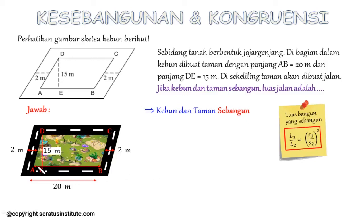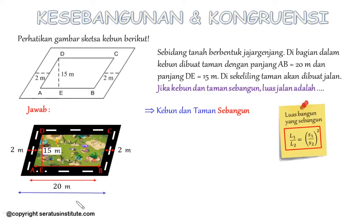Jika dilihat, AB yang merupakan alas dari taman bersesuaian dengan panjang atau alas dari kebunnya. Alas dari kebun panjangnya: panjang AB 20 meter, kemudian lebar jalan di sebelah kiri 2 meter, lebar jalan di sebelah kanan 2 meter. Sehingga alas atau panjang dari kebunnya yaitu 2 + 20 + 2 = 24 meter. Sekarang kita sudah peroleh nilai perbandingan sisi-sisi yang bersesuaian antara taman dan kebun, yaitu 20 banding 24.